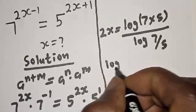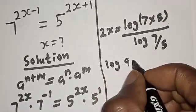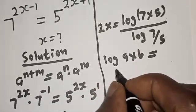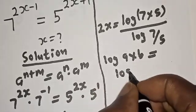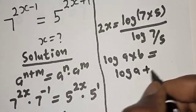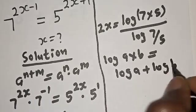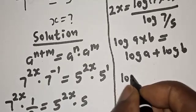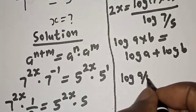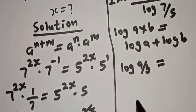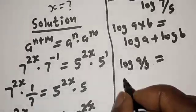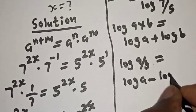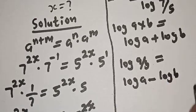Take note of this rule: if you have log a times b, this is equal to log a plus log b. Also, if you have log a over b, this is equal to log a minus log b.